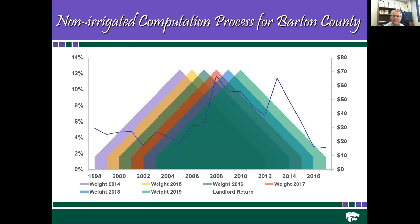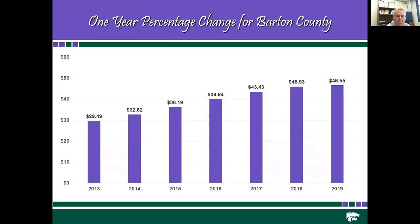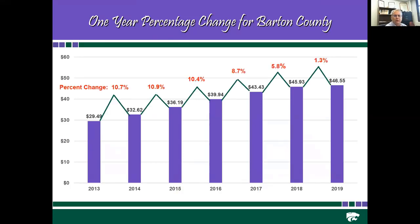That gives a picture of how the property tax formulation works. In 2013, the average landlord net income capitalized for Barton County was $29.50; that increased to $46.55 in 2019. Early on from 2013, changes were 10-11% per year. In 2016, 17, and 18, those percentages began to decrease, and from 2018 to 2019 there was only a 1.3% increase.